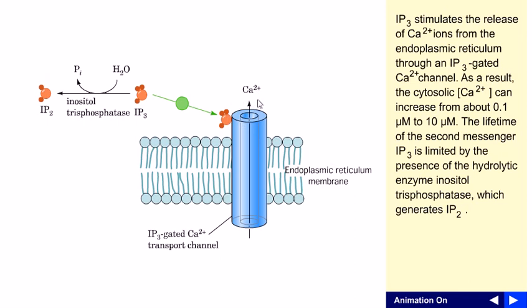After the production of calcium, the concentration can increase from about 0.1 micromolar to 10 micromolar. The lifetime of the second messenger, IP3 in this case, is limited by the presence of hydrolytic enzymes in the cytosol.